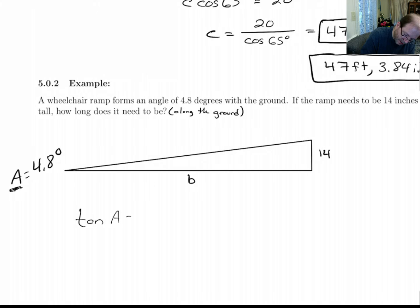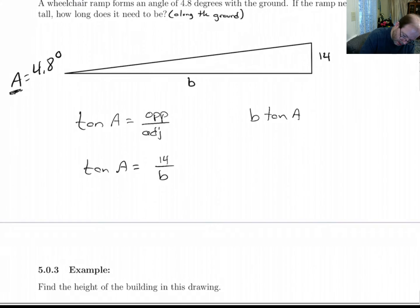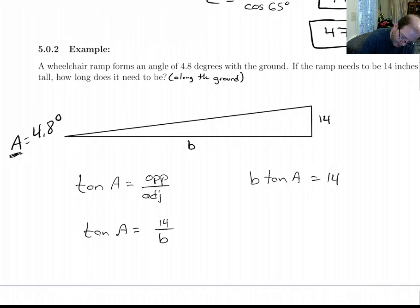Tangent of A is going to be opposite over adjacent. So we get tan A is 14 over B. So B tan A equals 14. And wait a second. Let's put in, we know what A is. Let's put it in. Tan of 4.8. B times tan of 4.8 degrees is equal to 14. So B is equal to 14 over tan of 4.8 degrees. And what do I get here? I get 166.72 inches.